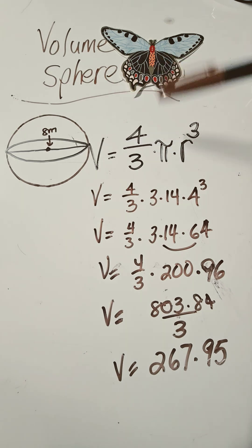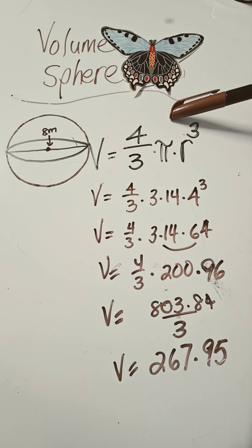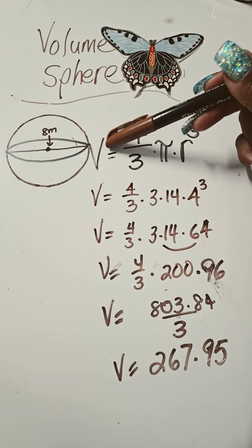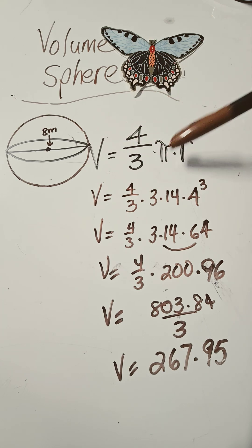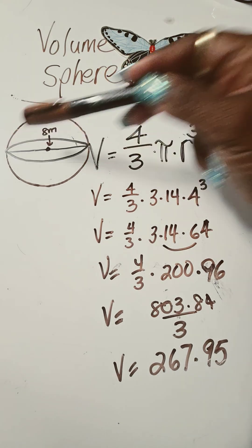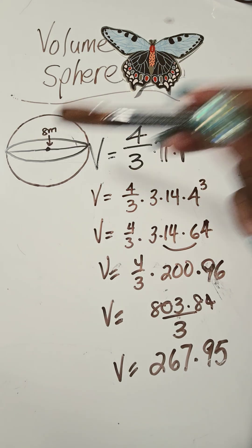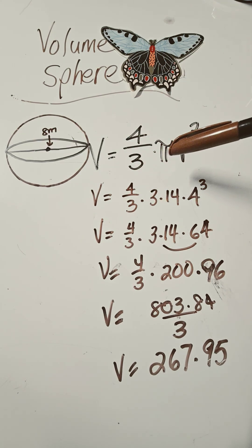And now the sphere has a totally different formula. There's no height involved. So the volume equals four thirds times pi times the radius cubed. Notice the radius is not squared. So whatever the radius is, that's the only number you're really given and all the other numbers are given for you.